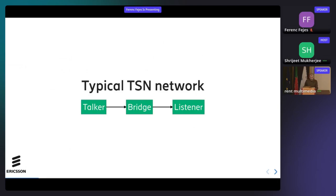A typical TSN network looks like this: traffic almost always goes in only one direction. You have a talker, some bridges between the talker and the listener. Maybe the listener can also act as a talker, but mostly it's like UDP communication — you don't have congestion control; flow control is basically handled by the application.